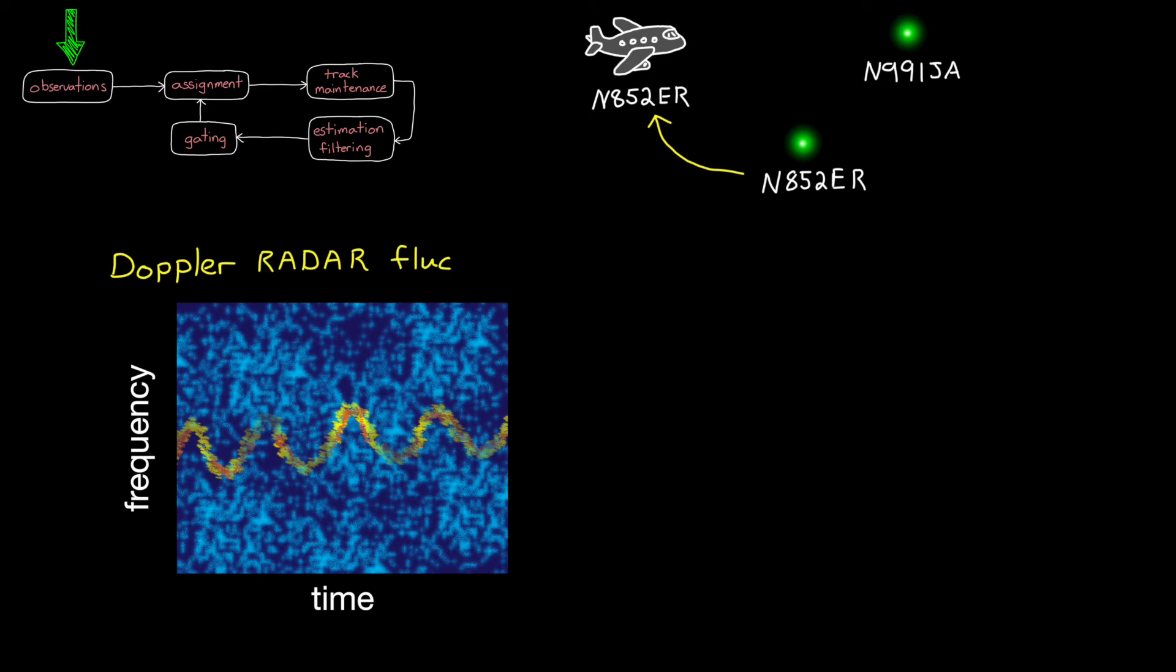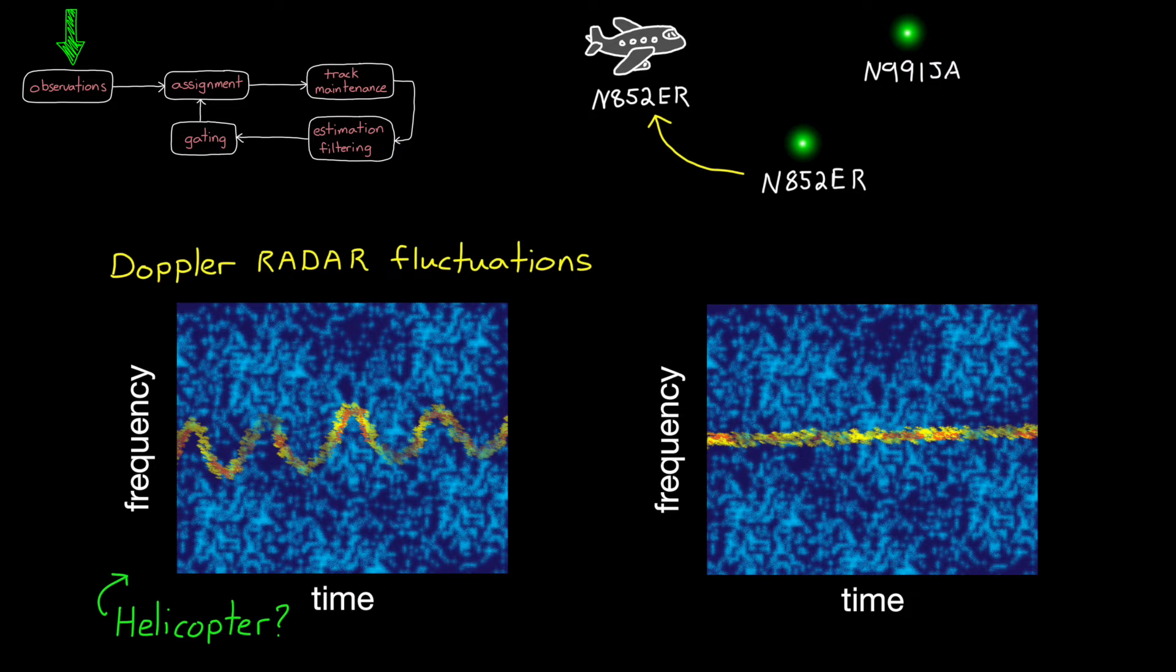For example, you might collect micro-doppler radar fluctuations and from that be able to determine the type of aircraft you're tracking. And the uncertainty in the observation depends on the degree of separation between the two objects. A helicopter might look completely different from a jet aircraft because of the large rotating propellers. Whereas a bird and a quadcopter might have similar Doppler signatures.